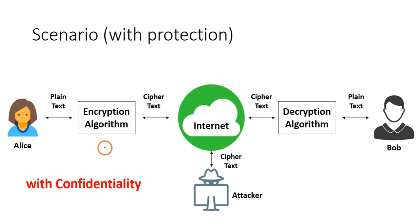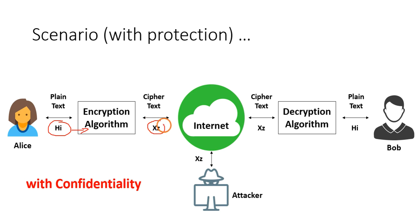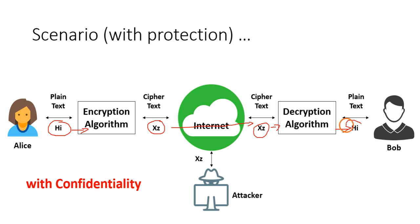For example, Alice sends 'hi' to Bob. This 'hi' is given as input to the encryption algorithm and is converted into some random string, say 'xz'. This 'xz' travels through the internet to Bob's system, where the decryption algorithm converts it back to plain text 'hi', which is read by Bob. The attacker can only see 'xz' and does not understand whether it means 'hi' or something else.